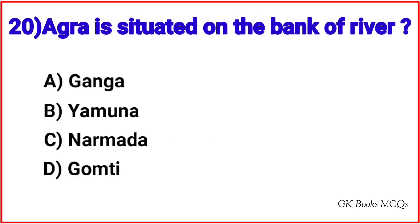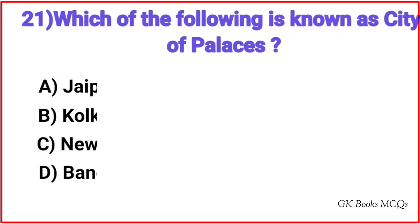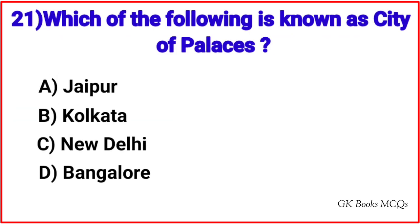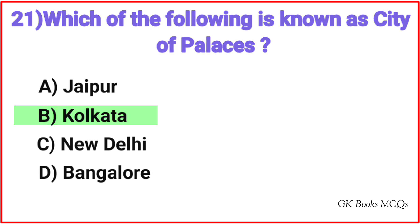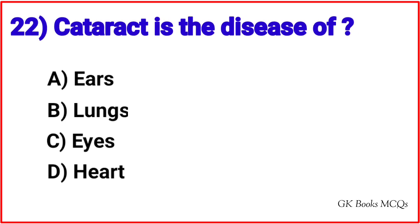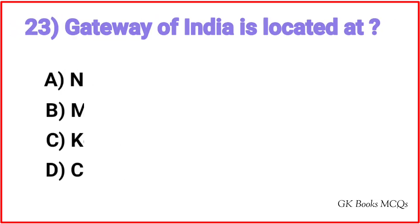Question 21: Which of the following is known as City of Palaces? Correct answer is option B, Kolkata. Question 22: Cataract is the disease of? Correct answer is option C, Eyes. Question 23: Gateway of India is located at? Correct answer is option B, Mumbai.